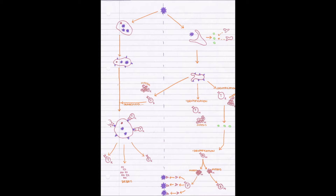Hello everybody and welcome to this biology video on the human body's secondary specific immune response. This is what happens when a pathogen breaches your primary defences — things like your skin, tear fluid, mucus, earwax, all those things.